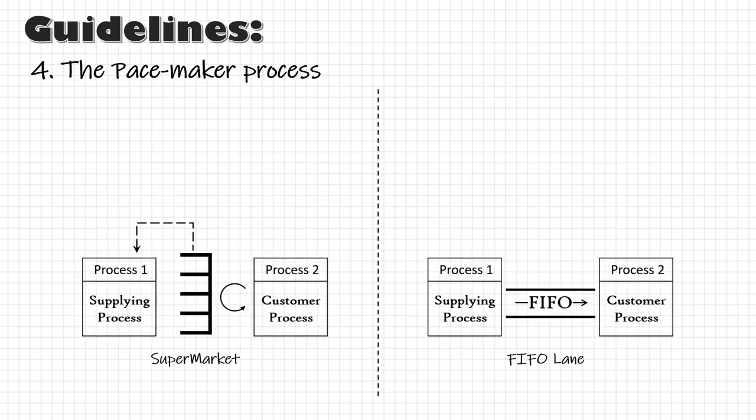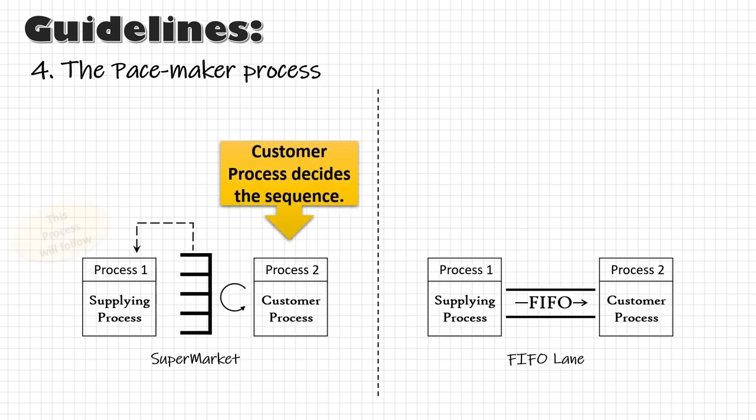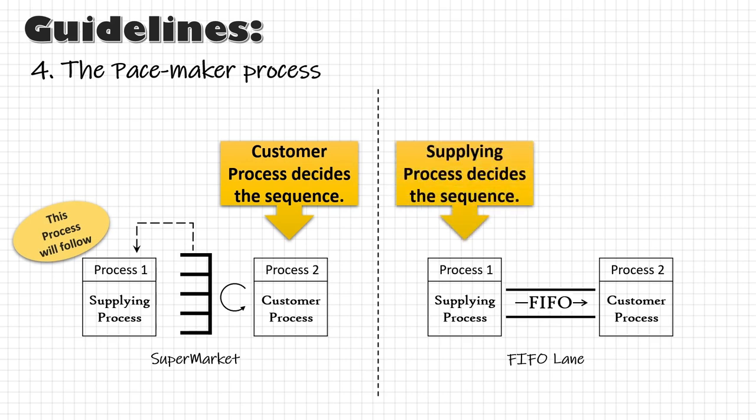Many of you must have noticed there is a difference between a supermarket and a FIFO lane. In supermarkets, the upstream process is producing as per the requirement of the downstream process. But in the FIFO lane, the downstream process is producing based on the sequence of the upstream process — the opposite.